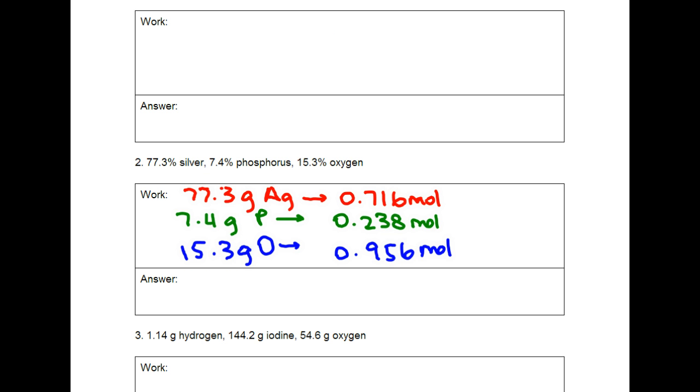For number 2, we do the same thing. 77.3% silver is the same thing as saying 77.3 grams of silver. We would use the for every statement with the molecular mass of silver. And we would calculate the moles of all of those different elements. When it says oxygen, because we're talking about creating an empirical formula, it is not talking about oxygen in the sense of a molecule, but rather in the sense of an element. So this is not one of those cases where you have to worry about diatomic or not.